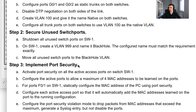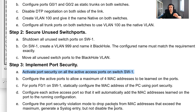Step three is implementing port security. We need to activate port security on all active access ports on Switch 1, configure them to allow a maximum of four MAC addresses, statically configure the MAC address of the PC on FastEthernet 0/1, configure sticky mode to automatically add learned MACs to the running config, and set the violation mode to restrict — which drops packets and generates a syslog entry without disabling the port.